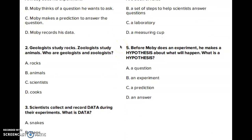Number 5. Before Moby does an experiment, he makes a hypothesis about what will happen. What is a hypothesis? A. A question. B. An experiment. C. A prediction. D. An answer.